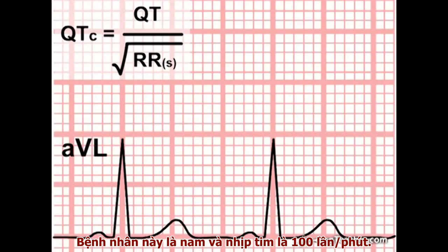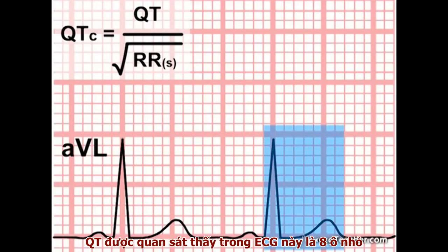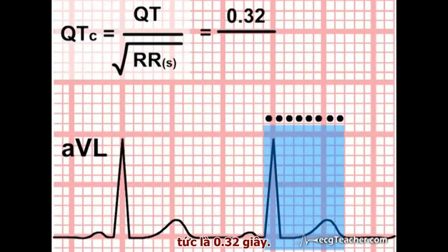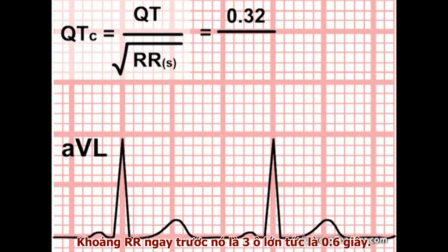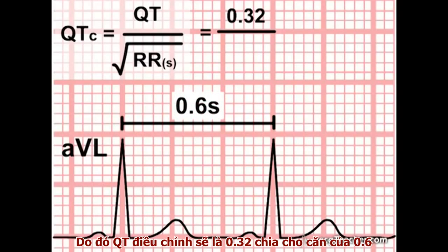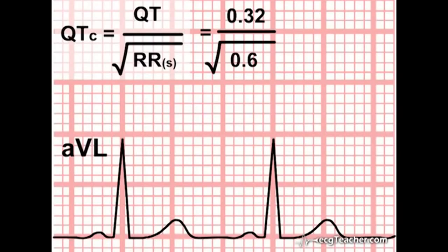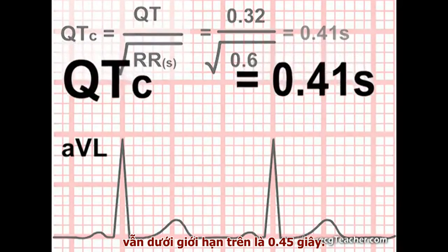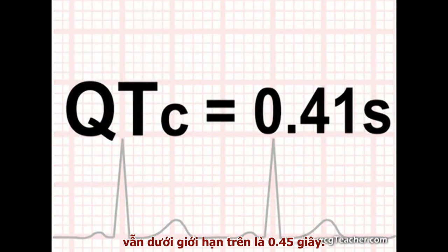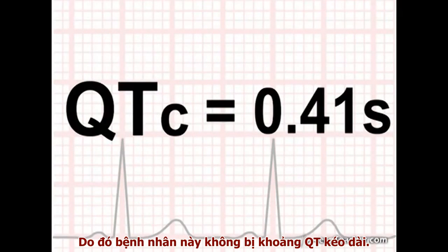The patient is male and the heart rate is 100 beats per minute. The observed QT interval on the ECG is 8 small squares or 0.32 seconds. The immediately preceding RR interval is 3 large squares or 0.6 seconds. So the corrected QT is 0.32 divided by the square root of 0.6. This computes at 0.41 seconds, well within our upper limit of 0.45 seconds. So this patient does not have prolonged QT.